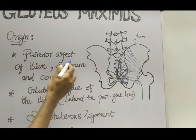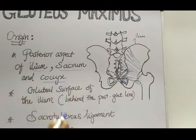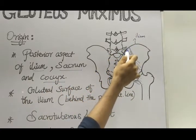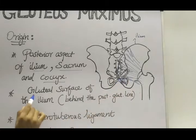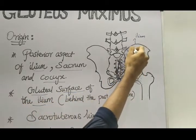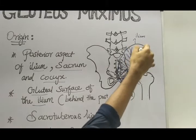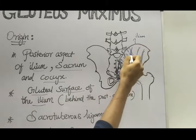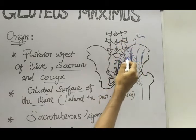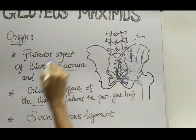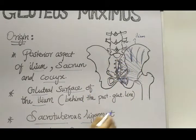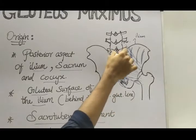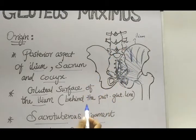To summarize the origin: the posterior aspect of the ilium, sacrum, and coccyx; the gluteal surface of the ilium — behind the posterior gluteal line, this surface is known as the gluteal surface of the ilium; the sacrotuberous ligament; and also the lumbar fascia, which is present here. From all these points, the muscle originates.